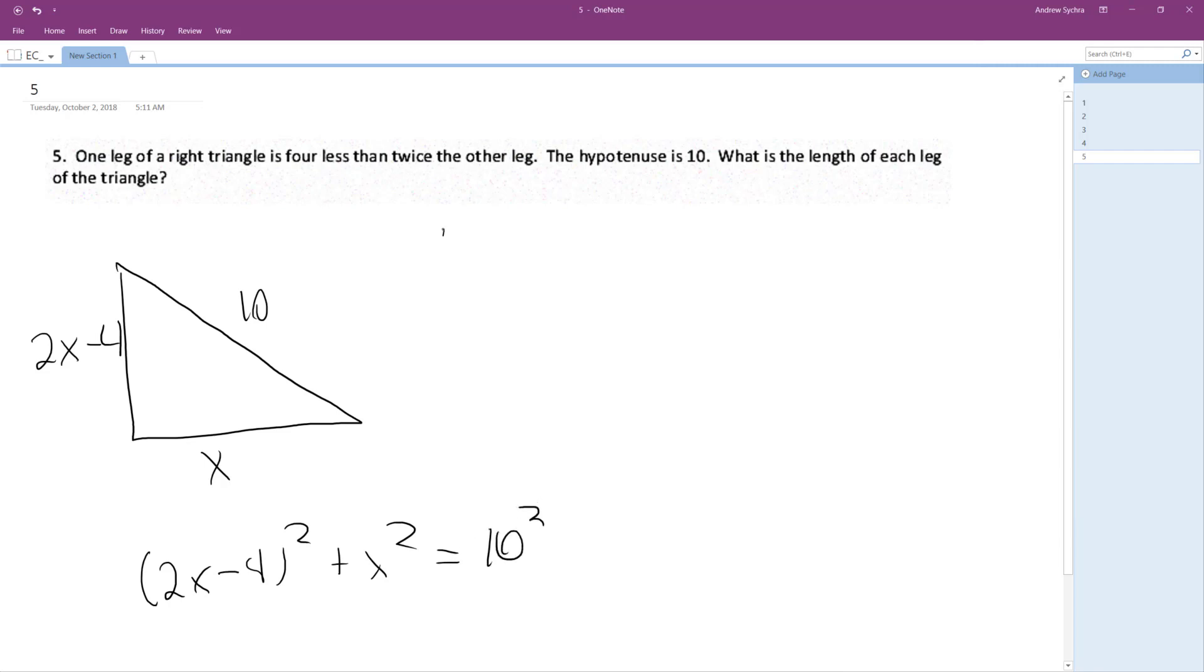So we get 4x squared minus 8x, so minus 16x plus 16, plus x squared equals 100. So 5x squared minus 16x, and then 16 minus 100 is minus 84 equals zero.